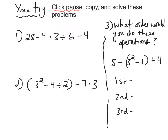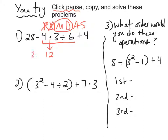Let's go over number one. Remember PEMDAS — I'll write that down quickly as a reference. 28 minus 4 times 3 divided by 6 plus 4. There's no parentheses, no exponents. There are multiplications and divisions, so I look at those first from left to right. I see 4 times 3 divided by 6 — this part gets done first. From left to right, multiplication comes first: 4 times 3 is 12. I rewrite the problem: 28 minus 12 divided by 6 plus 4. Division still comes before add and subtract, so 12 divided by 6 is 2. I'm left with 28 minus 2 plus 4. Addition and subtraction from left to right: 28 minus 2 is 26, plus 4 is 30.